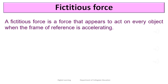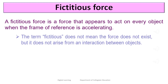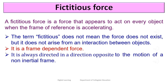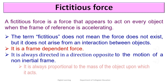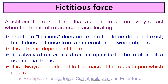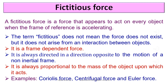A fictitious force is a force that appears to act on every object when the frame of reference is accelerating. It is also called pseudo force or inertial force. The term fictitious does not mean the force does not exist, but it does not arise from an interaction between objects. It is a frame-dependent force, always directed opposite to the motion of a non-inertial frame, and always proportional to the mass of the object upon which it acts. Examples are Coriolis force, centrifugal force, and Euler force.